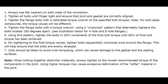Number 4: Tighten the flange bolts with a torque wrench using a criss-cross pattern that alternately tightens the bolts located 180 degrees apart. See the illustration for 4-hole and 8-hole flanges. Number 5: Using this pattern, tighten the bolts in 20% increments of the final bolt torque until 80% of final bolt torque has been achieved. Number 6: For tightening to the final torque values, tighten bolts sequentially clockwise once around the flange. This will help ensure that the bolts are evenly stressed.